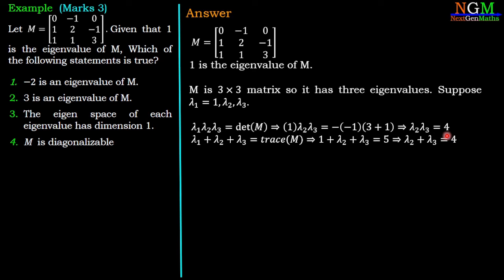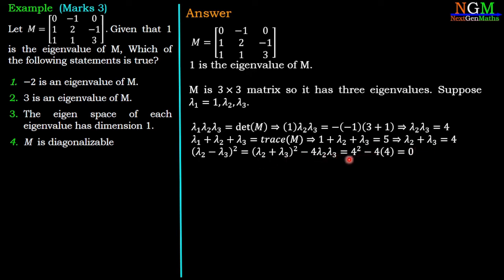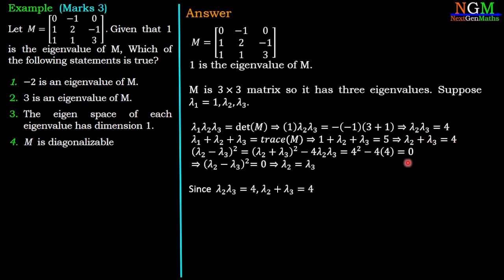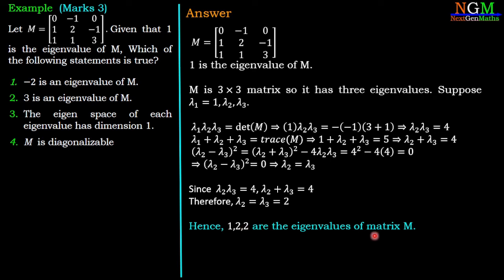We now have two equations: λ2 × λ3 = 4 and λ2 + λ3 = 4. To find λ2 and λ3, we compute (λ2 - λ3)² = (λ2 + λ3)² - 4(λ2 × λ3) = 16 - 16 = 0. Therefore λ2 = λ3, and substituting back gives λ2 = λ3 = 2. Hence the eigenvalues of matrix M are 1, 2, and 2.